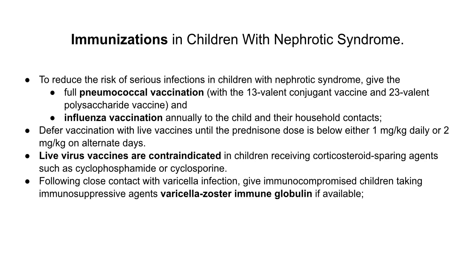Nephrotic syndrome patients are more prone to infections due to increased loss of immunoglobulin G and complements. To reduce the risk of serious infection, pneumococcal and influenza vaccines are given annually. Live viral vaccines are contraindicated in children receiving corticosteroid-sparing agents such as cyclophosphamide and cyclosporine.